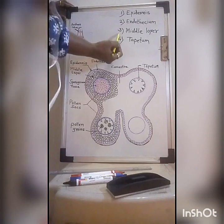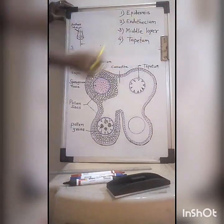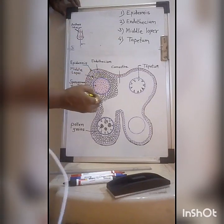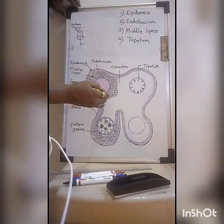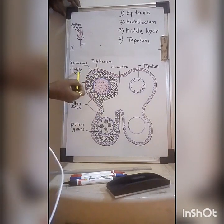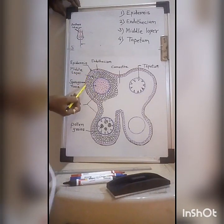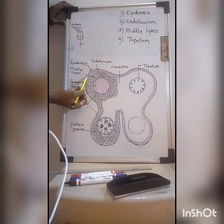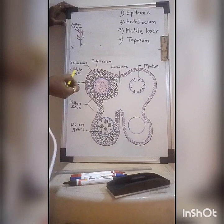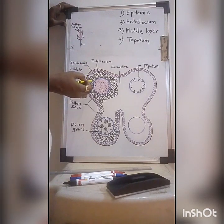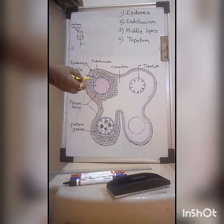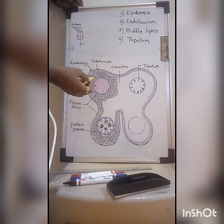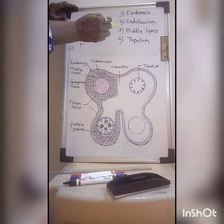Then comes the third layer of cells, that is the middle layer. All the black-colored cells in the diagram represent the middle layer — drawn with a black marker. The middle layer is about two to three layers of cells. These cells are thin-walled, which helps in the process of dehiscence at maturity.